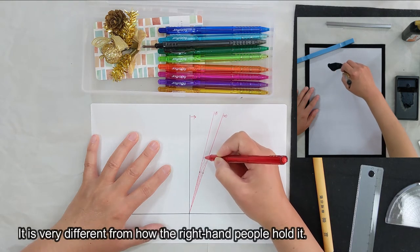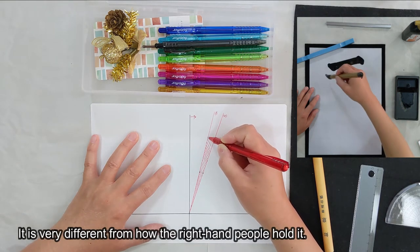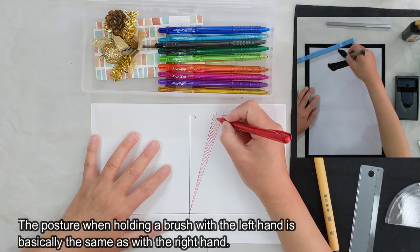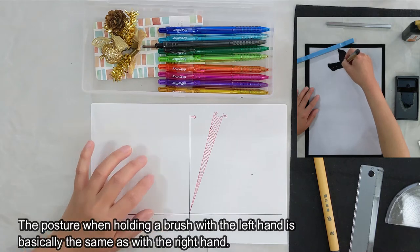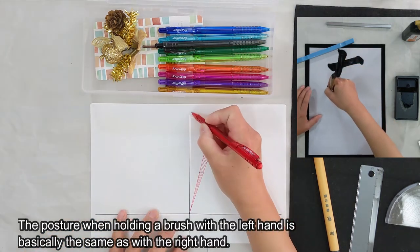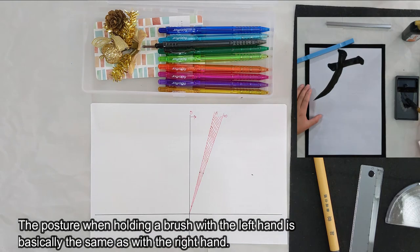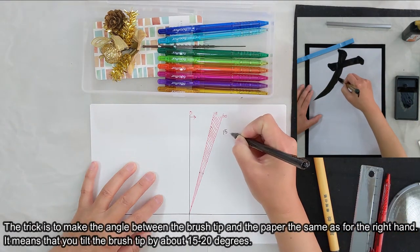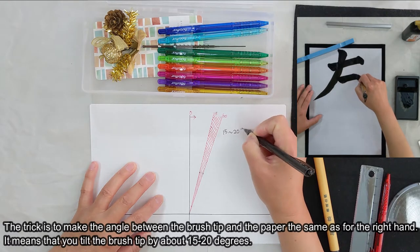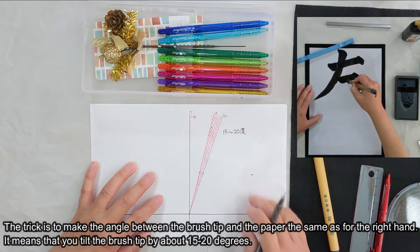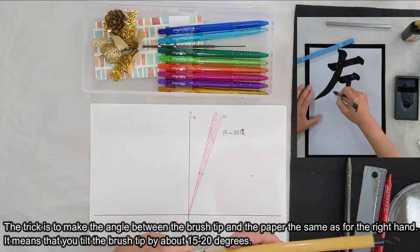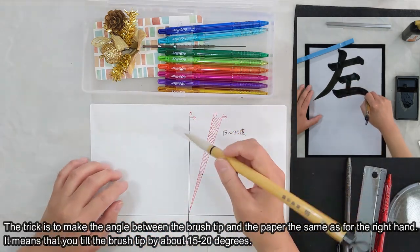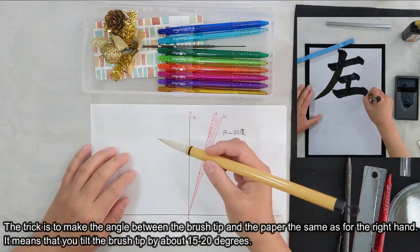It is very different from how right-hand people hold it. The posture when holding a brush with the left hand is basically the same as with the right hand. The trick is to make the angle between the brush tip and the paper the same as for the right hand, tilting the brush tip by about 15 to 20 degrees.